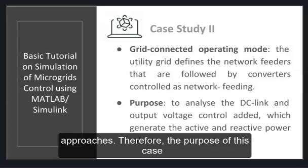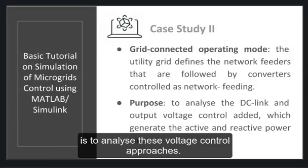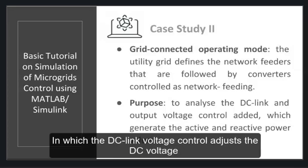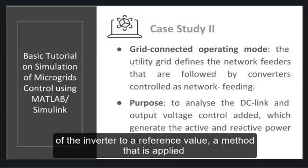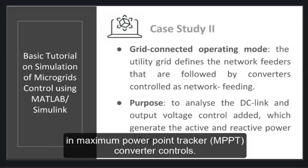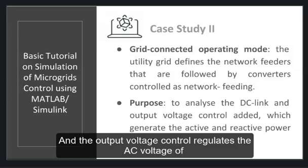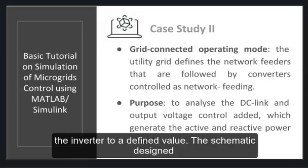Therefore, the purpose of this case is to analyze this voltage control approach, in which the DC link voltage control adjusts the DC voltage of the inverter to a reference value, a method that is applied in maximum power point tracker converter controls. And the output voltage control regulates the AC voltage of the inverter to a defined value.